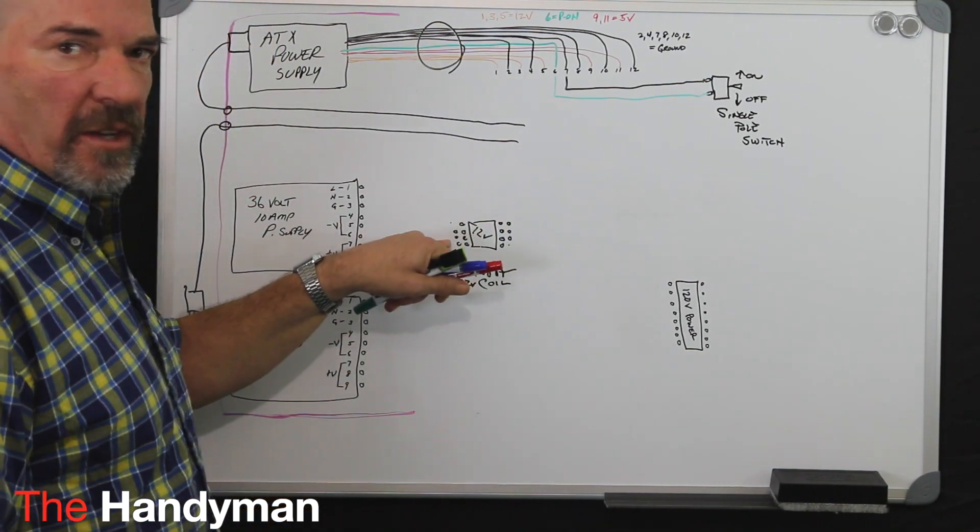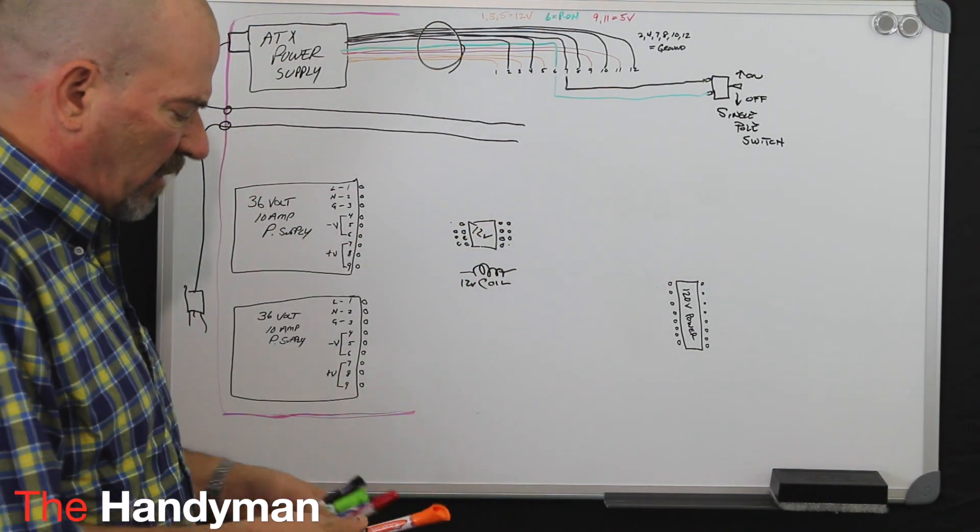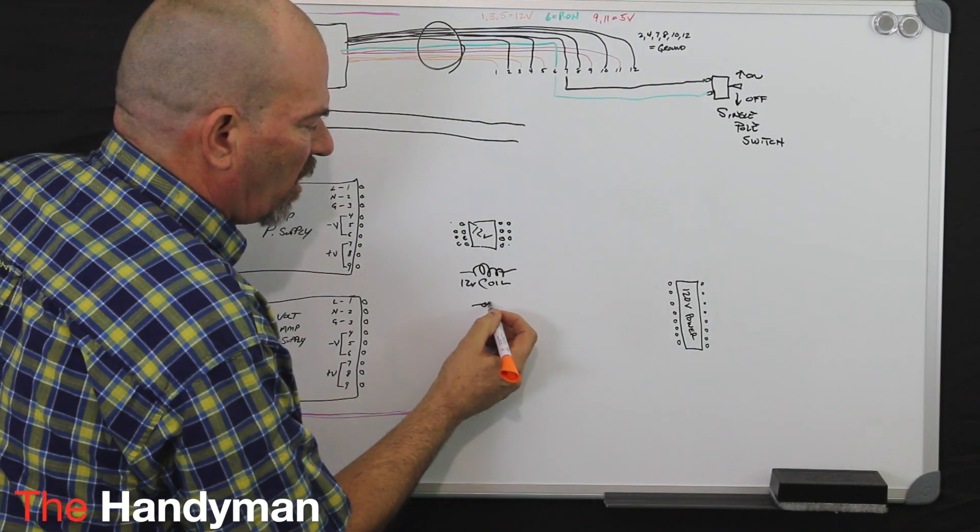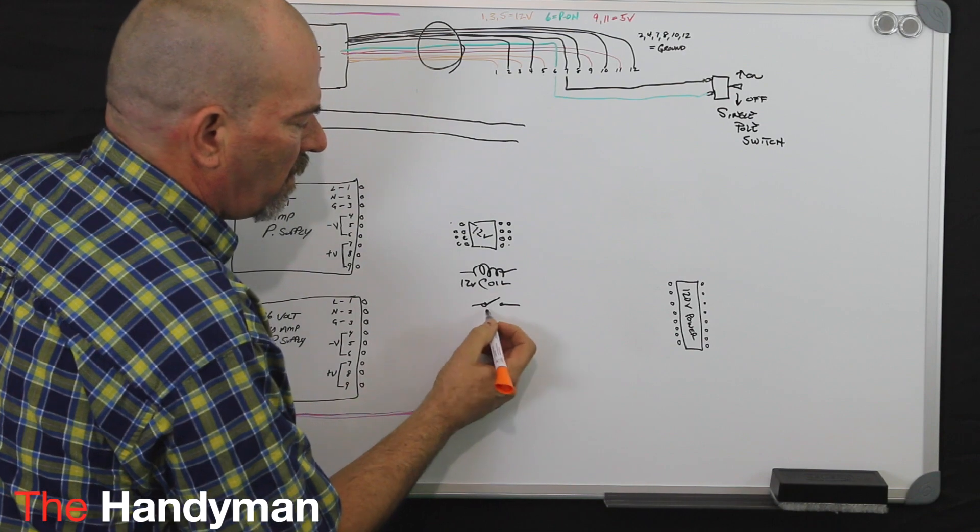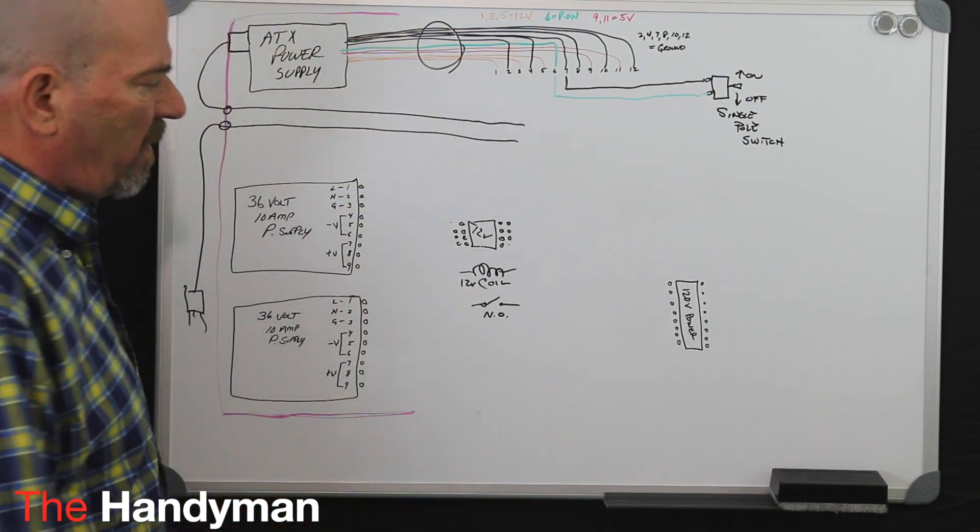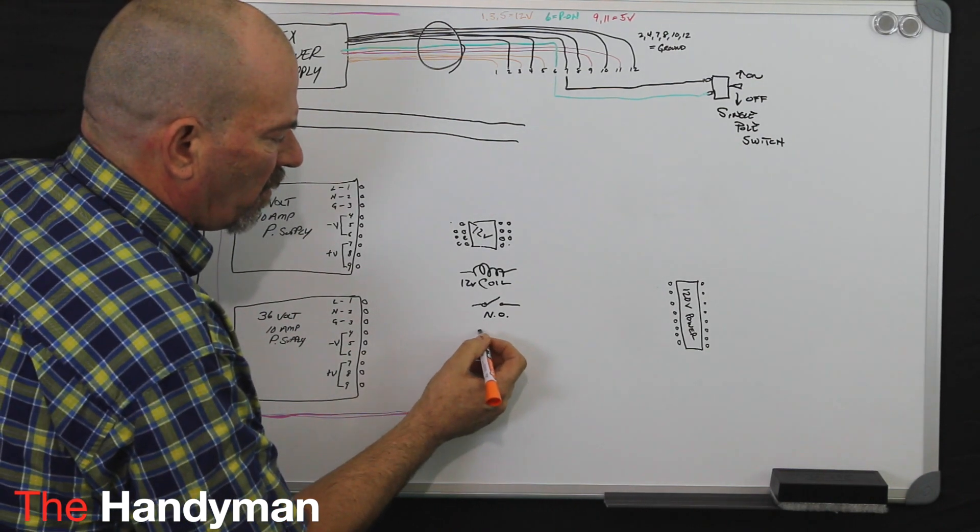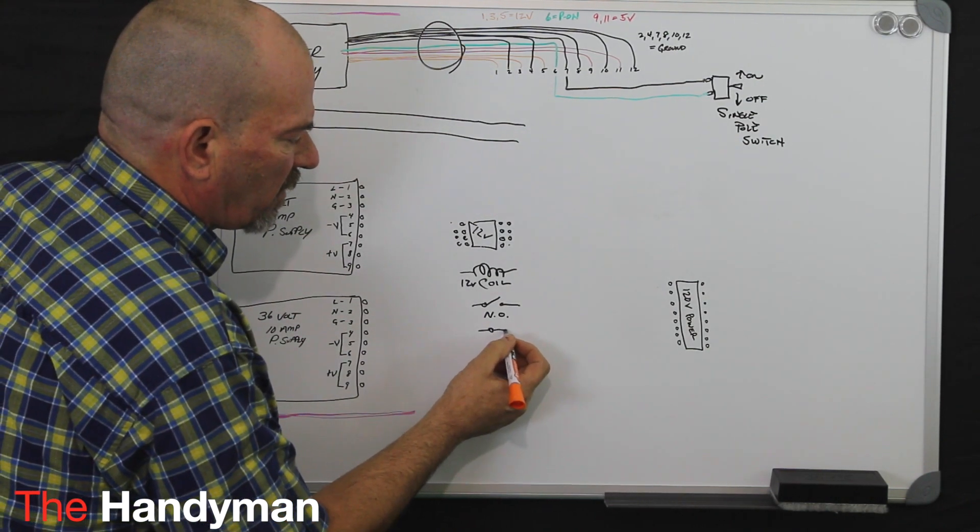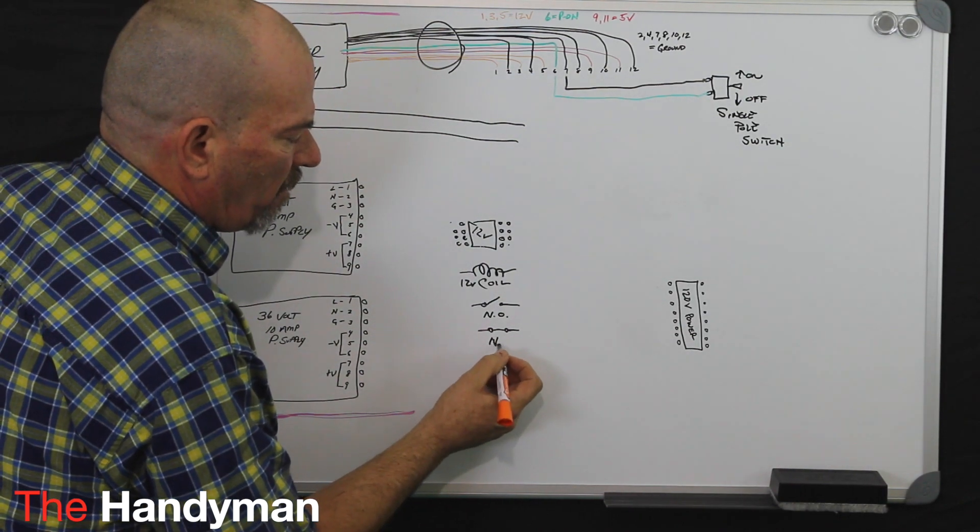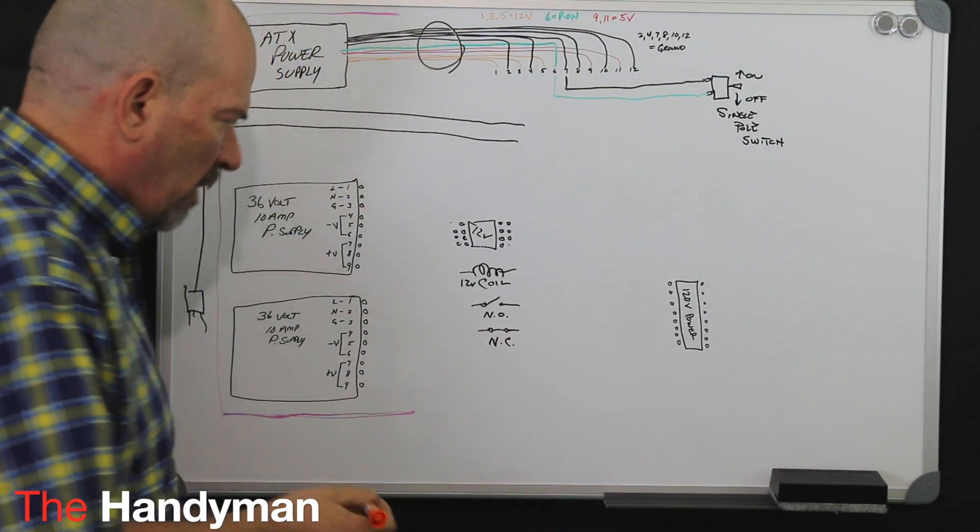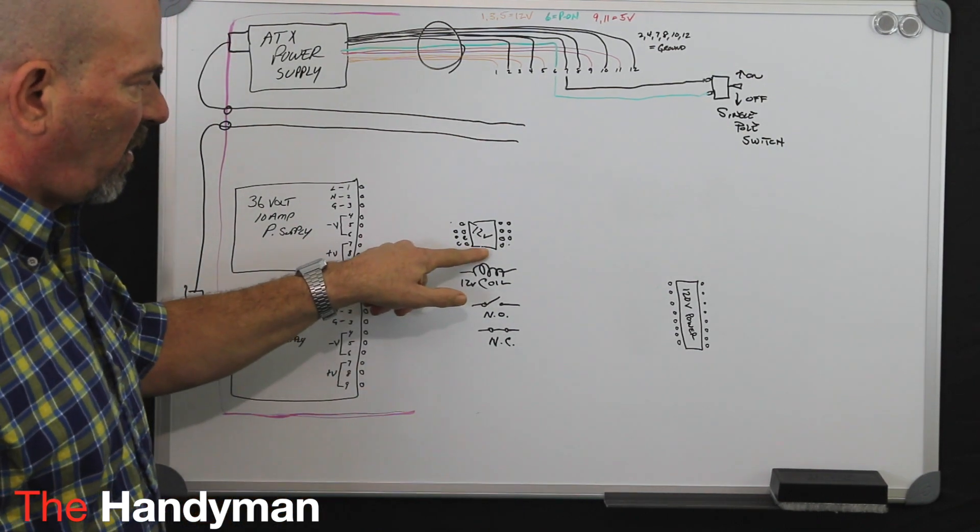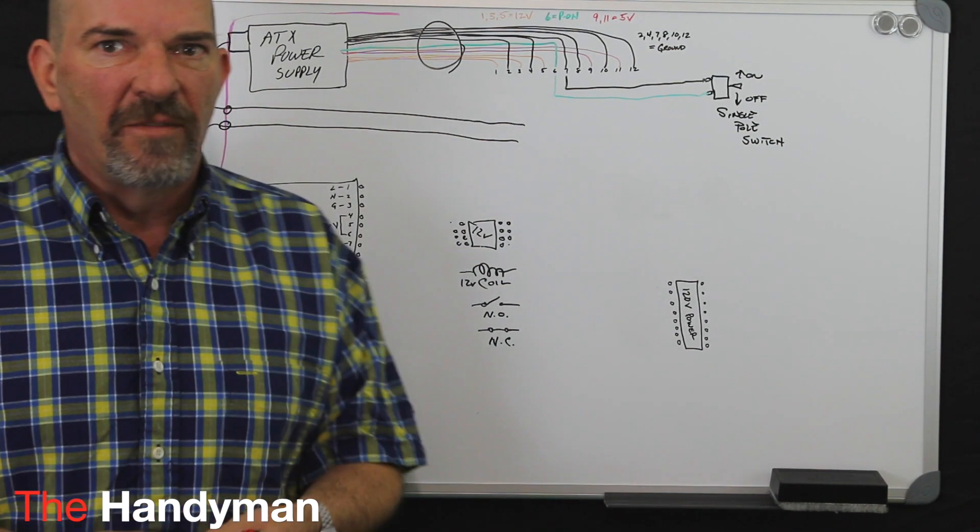Then between certain points, you're going to have contacts. You're going to have normally open, which is represented something similar to that. And usually, on the plug-in part on these coils, they'll have a diagram.